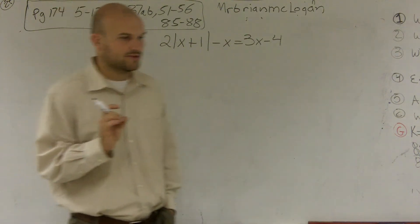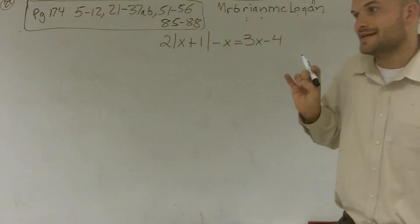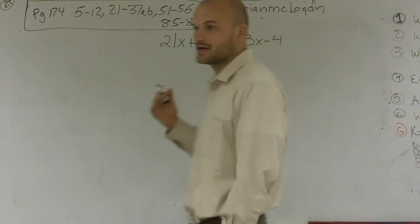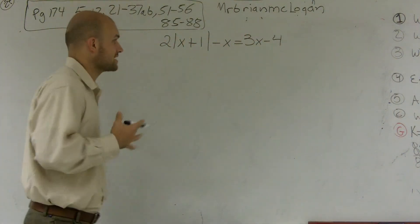So when doing absolute value equations, we're going to find the positive and the negative value that's still going to satisfy our absolute value. And here's how we're going to do it.